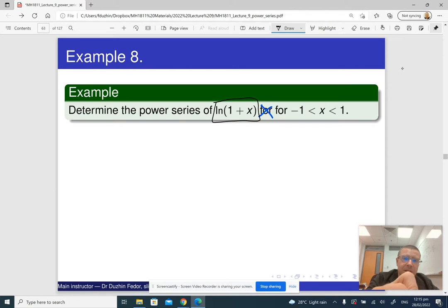And we know the power series for this function. We can rewrite it as 1 over (1 minus negative x). And this is 1 minus x plus x squared minus x cubed plus x to the 4 minus and so on. This is a geometric power series with a common ratio of negative x.